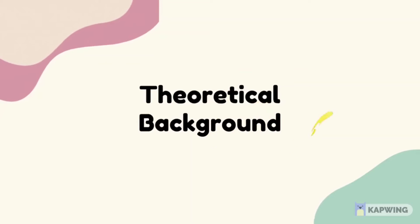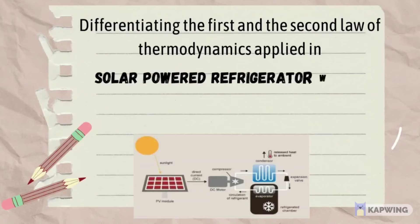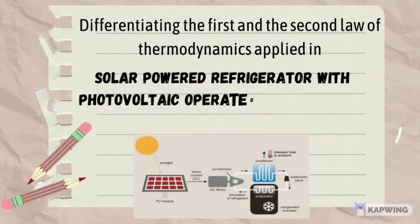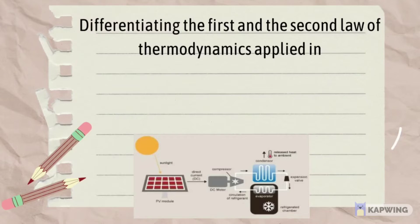Next is the theoretical background. We will be differentiating the first and second law of thermodynamics as applied in a solar power refrigerator with a photovoltaic-operated refrigeration system.